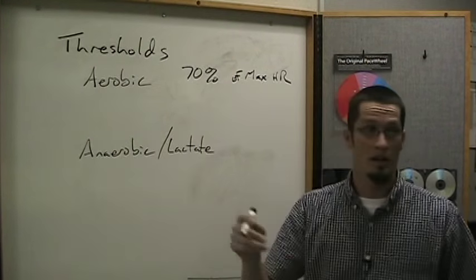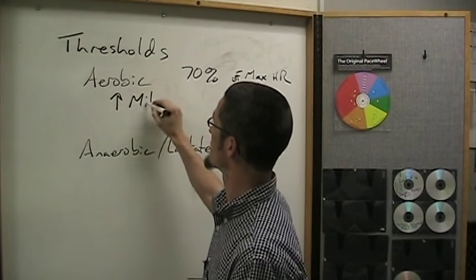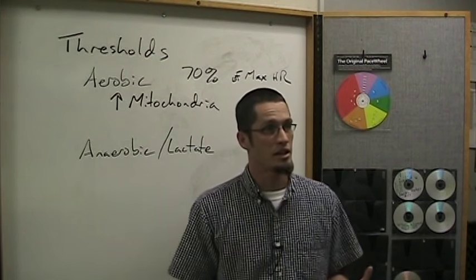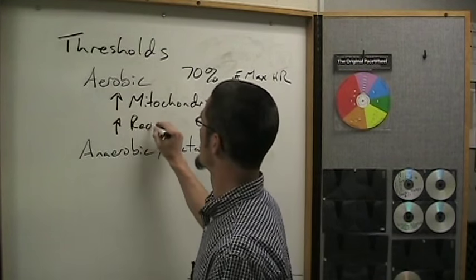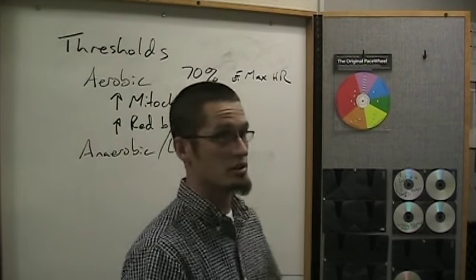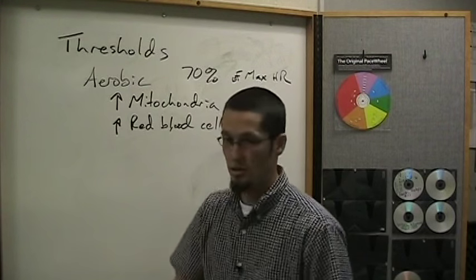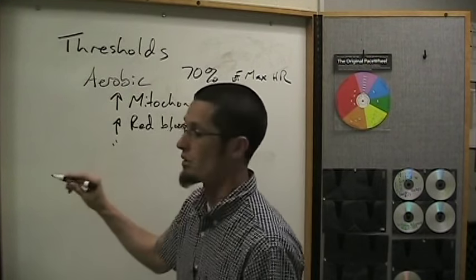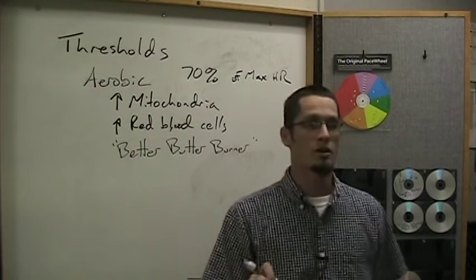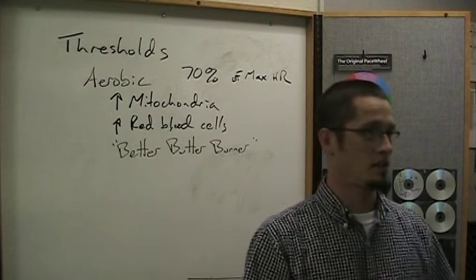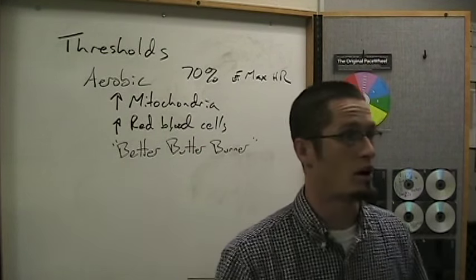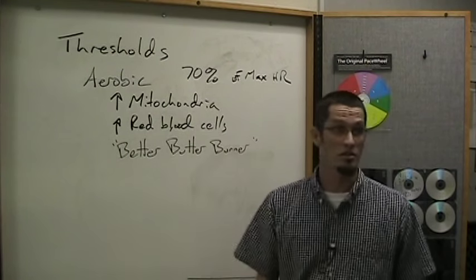You want to train below the aerobic threshold in order to develop the most beneficial adaptations for your body. Among the adaptations that happen when you're training aerobically are an increase in mitochondria — those are the little engines in the muscles. You're going to increase red blood cells, which will allow you to carry more oxygen to the muscles as they're running. You want to train your body to become, as Roy Benson says, a better butter burner — able to burn fat most efficiently. That requires you to run at about 70% of your maximum heart rate.